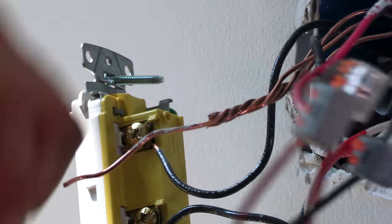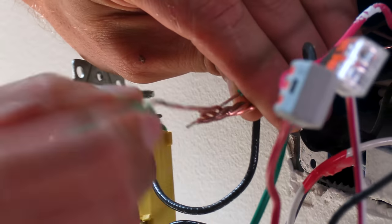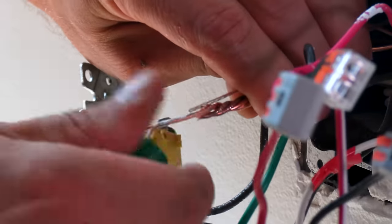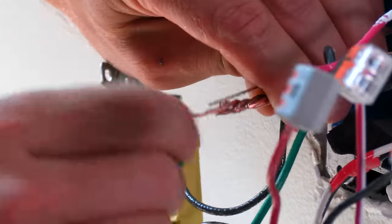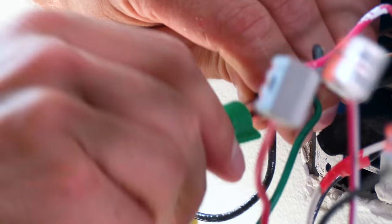Then, I'm going to incorporate my dimmer ground with the others. I'm going to slide on this green grounding wing nut. Come on. My conductor's not very straight. That's the only reason it's struggling. There it is.